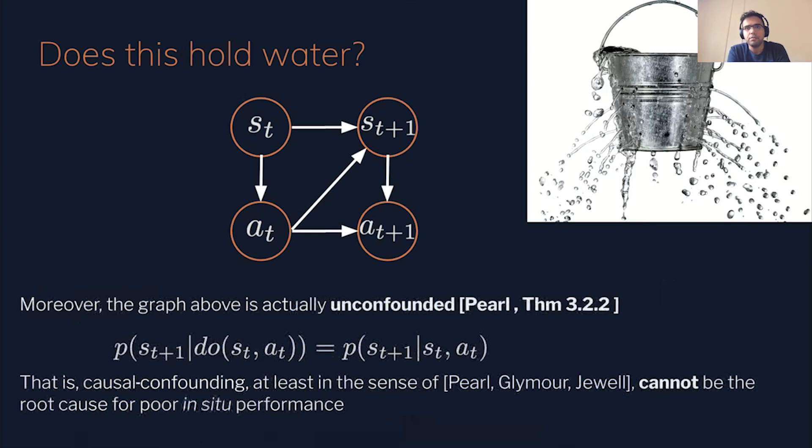The other point that was made was that past actions act as a confound. Now, this contradicts with the technical definition of confound as put forward by Pearl. All the nodes in this graphical model are observed. That is the states and actions. There are no latent variables. So if you were to go ahead and compute the interventional probability, p(st+1) conditioned on do(st, at), this turns out to be equal to the observational probability. So this equality implies that the graph is unconfounded. And if we had infinite data and excitation, we would in fact recover the correct weights for the graphical model. We know that this fact also holds in all the experiments that were presented in the paper, where all variables were observed. So we claim that causal confounding, at least in the sense of Pearl, Glymour, and Jewell, cannot be the root cause for the observed poor in-situ performance.